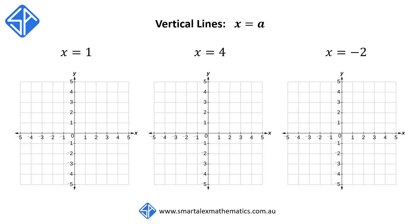The first type of line with one intercept is the vertical line of the form x is equal to a, where a is a constant. Our first example is x is equal to 1. This is simply a vertical line through x is equal to 1.